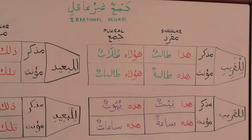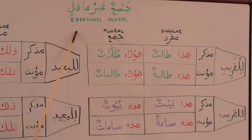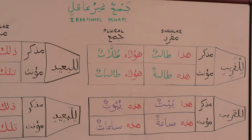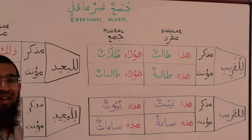بسم الله الرحمن الرحيم، الحمد لله رب العالمين والصلاة والسلام على رسول الله وعلى آله وصحبه أجمعين. Welcome to lesson 16. In this lesson we will learn about جمع غير عاقل, the irrational plural. But before we do that, we must recap some of the older material and tie it into the new lesson.